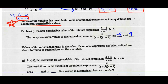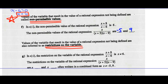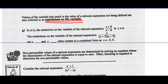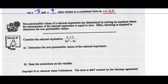Values of the variables that result in the value of the rational expression not being defined are also referred to as restrictions on the variable. We can call them non-permissible values, or restrictions on the variable. The restrictions would be: x cannot equal 6, and x cannot equal negative 5 or positive 9. Note: non-permissible values of a rational expression are determined by solving an equation where the denominator of the rational expression is equal to 0. Often, factoring is required to determine this non-permissible value, so you have to know how to factor. Then we set the factors equal to 0 to find the non-permissible values.